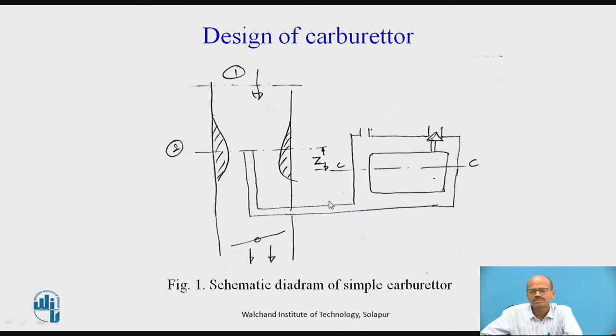In the previous session we have seen the introduction of simple carburetor. There we saw the air flowing in the downward direction as this is the downdraft type of carburetor and the fuel injection is from this tube. We will consider section 1-1 at the inlet, section 2-2 at the throat, and section C-C or 3. This is the throttle valve and this is the difference between the height. The nozzle tip is getting opened over here. This is considered as a reference line and the petrol level in the float chamber is assumed to be constant. This is Z.